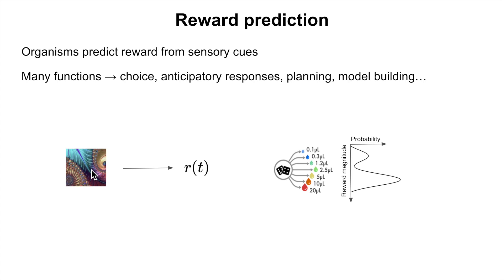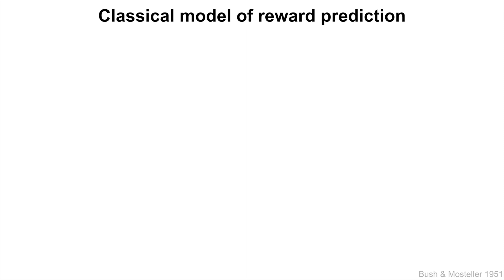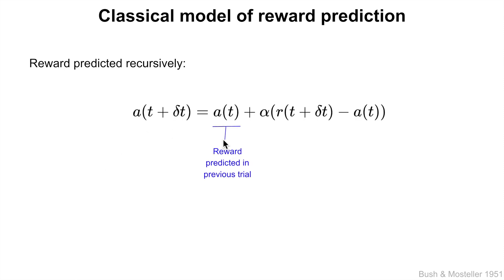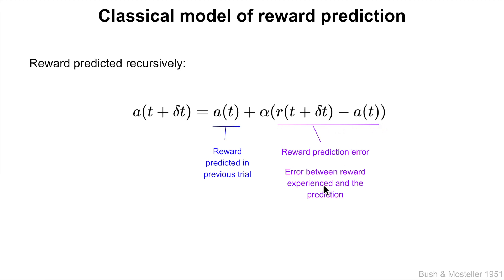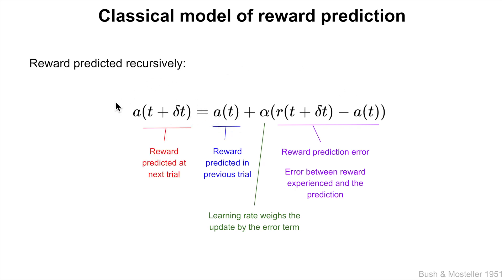The animal is trying to learn what reward is associated with the stimulus — maybe estimating the average reward or the full reward probability distribution. In the classical model from Bush and Mosteller, rewards are predicted recursively. A(t) is the reward predicted in the previous trial. The reward prediction error is the difference between the reward experienced at t+Δt and the previous prediction at t. That error is weighted by a learning rate, and together the weighted prediction error updates the previous prediction into the new prediction for the next trial.